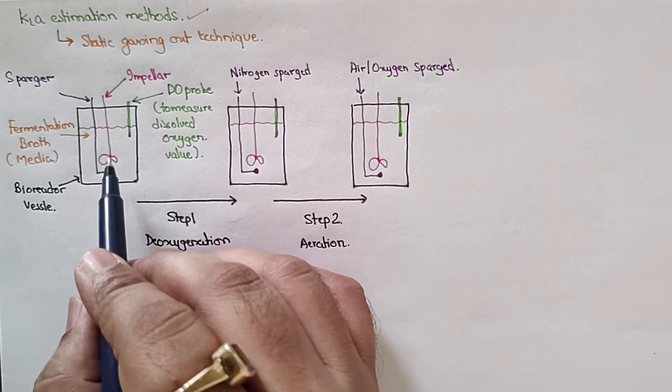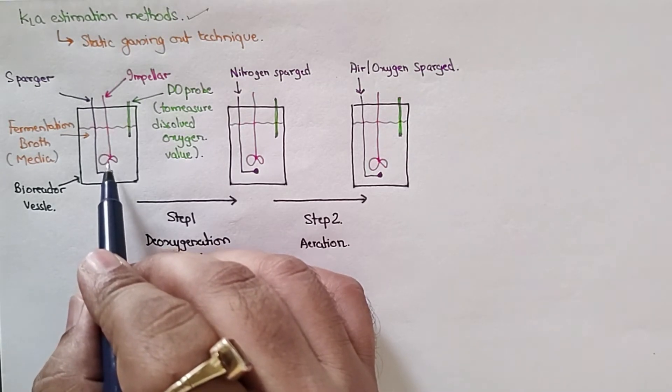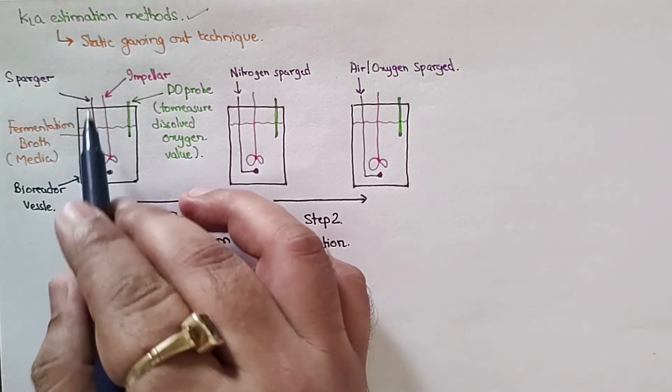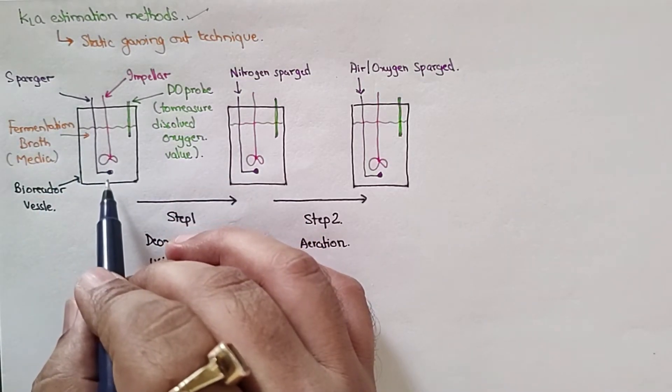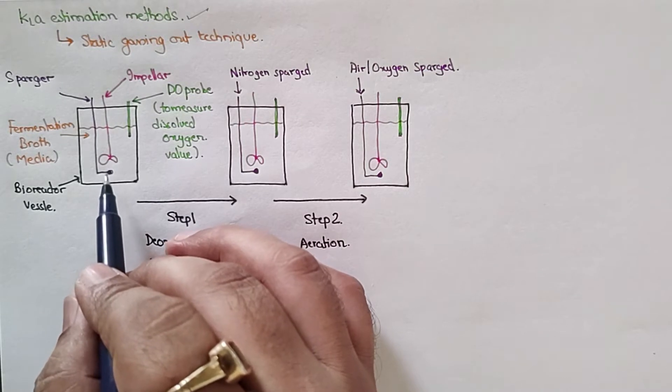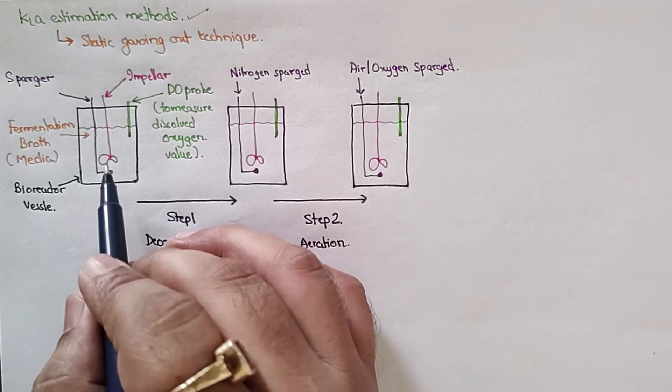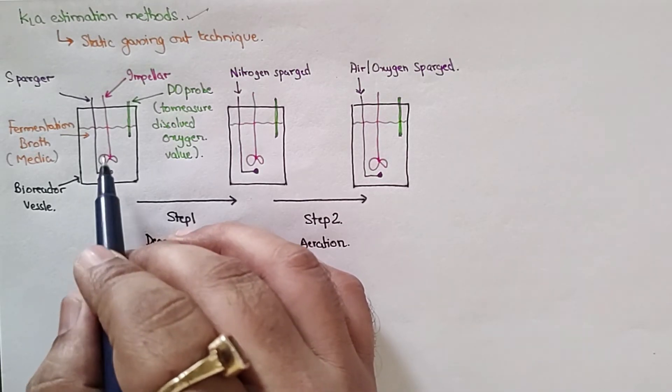The impeller allows us to understand how agitation impacts oxygen transfer. It will have a sparger. This sparger allows us to sparge oxygen and understand how the aeration rate, aeration concentration, or aeration saturation affects oxygen transfer rates.